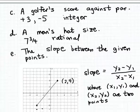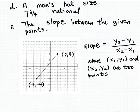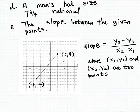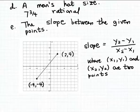For the last example, suppose we want to calculate the slope between two given points. To briefly review: if you have two points on the rectangular coordinate system, labeled (x₁, y₁) and (x₂, y₂), you can calculate the slope by taking the difference in the y-coordinates and dividing that by the difference in the x-coordinates.